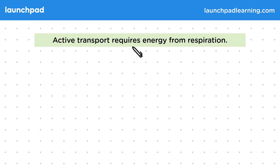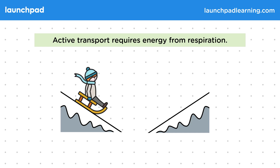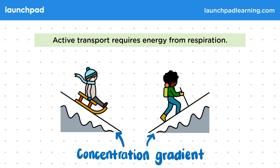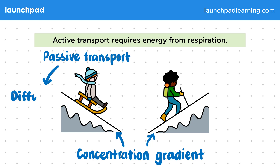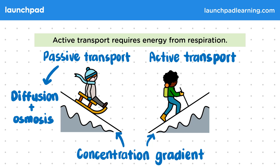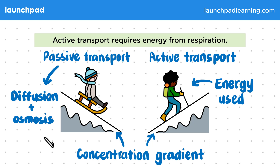Active transport requires energy from respiration. In this diagram, the mountain slope can represent a concentration gradient. Movement down the gradient, like when you're on a sledge, requires no energy — it's passive. Two examples of passive transport are diffusion and osmosis. However, movement up a concentration gradient requires energy, like hiking up a hill or swimming against a current. It's active, and this energy comes from respiration. Diffusion and osmosis do not require energy, but active transport does.